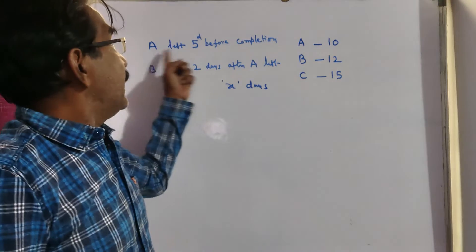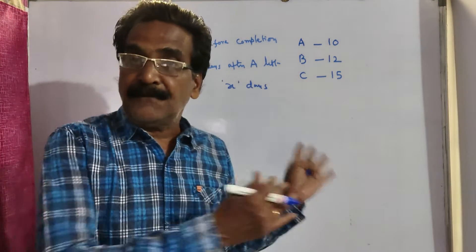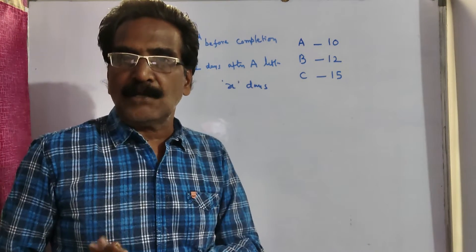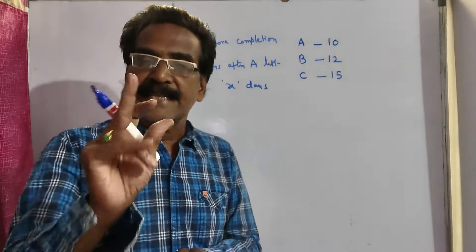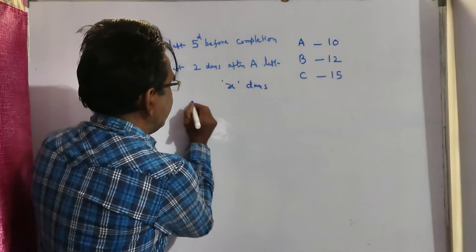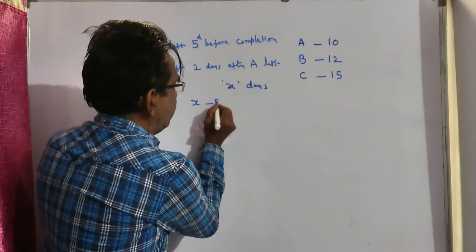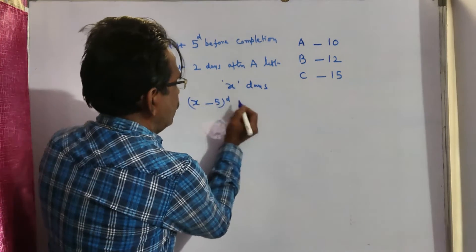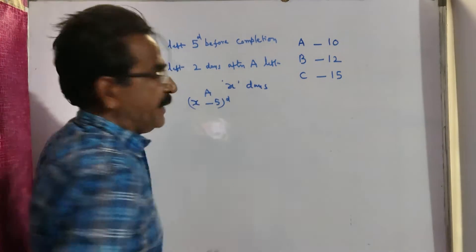Now, A left 5 days before the completion of the work. So, how many days did A work? X minus 5 days. A worked for X minus 5 days.